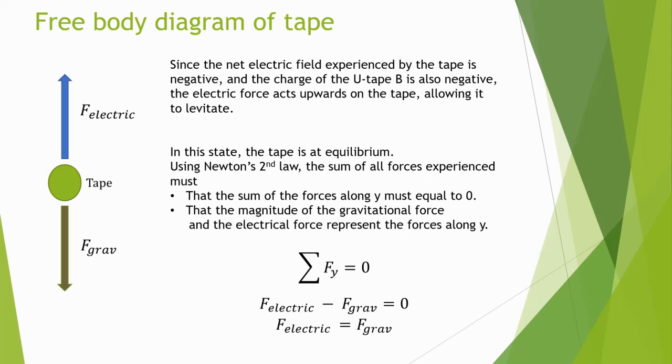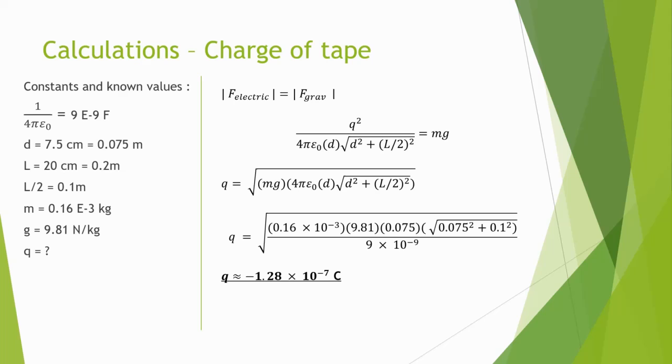Applying Coulomb's law, the electric force on the tape acts upwards. Since the tape is levitating, the tape must be at static equilibrium, and by applying Newton's second law, the experimenter deduced that the magnitude of the electric force is equal to the magnitude of the gravitational force. Hence, by inputting all values collected from lab 1, the electric field of a uniformly charged rod, and Coulomb's law, the experimenter calculated the charge of the tape to be negative 1.28 times 10 to negative 7 Coulombs.